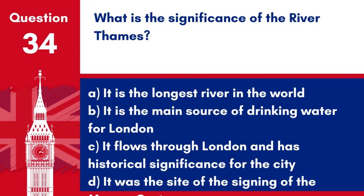Question 34. What is the significance of the River Thames? A. It is the longest river in the world. B. It is the main source of drinking water for London. C. It flows through London and has historical significance for the city. D. It was the site of the signing of the Magna Carta. Answer: C. It flows through London and has historical significance for the city. The River Thames is significant for flowing through London and its importance in British history.